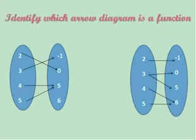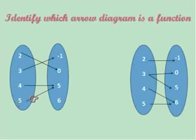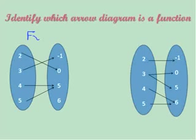Now we're going to look at the mapping diagrams or arrow diagrams and identify if they are functions. The same rule applies — we don't want to see any repeats of domain values. In this first one, we have 2 paired with 0, 3 paired with negative 1, 4 paired with 5, and 5 paired with 5. We have no repeating x values or domain values, so this is considered a function.